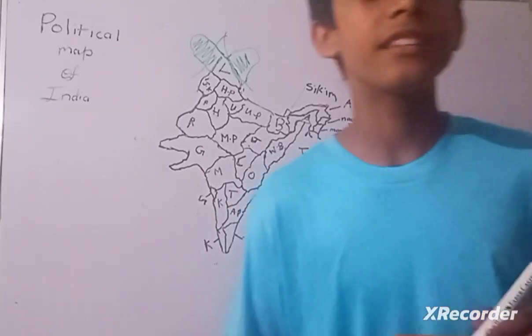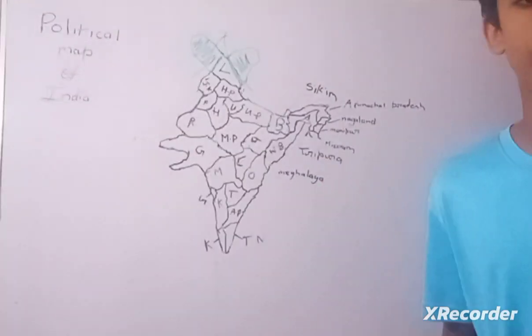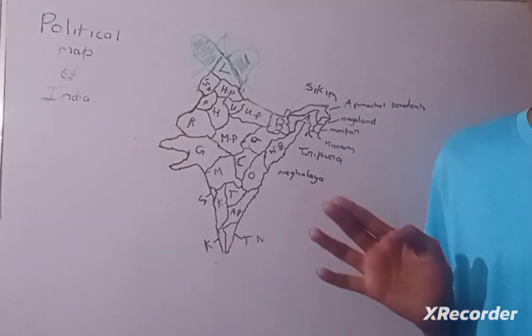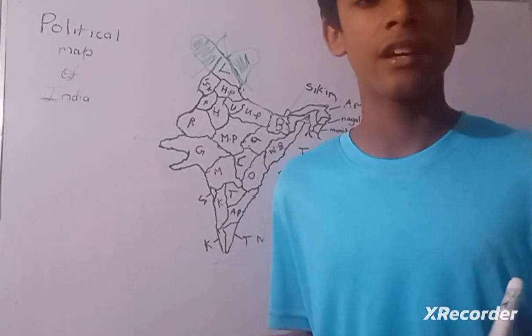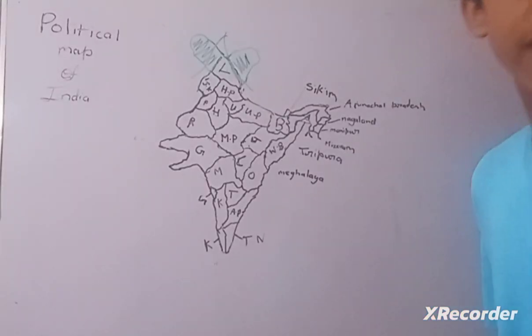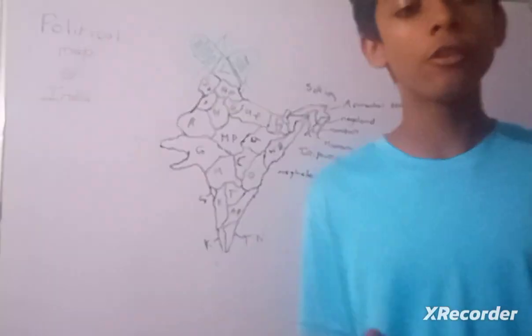Andhra Pradesh. Andhra Pradesh capital is Amaravati and famous for rice growing. Most rice is grown in Andhra Pradesh and famous for rivers Godavari and Krishna rivers. Then Karnataka. Karnataka's capital is Bengaluru and famous for Kuchipudi dance.